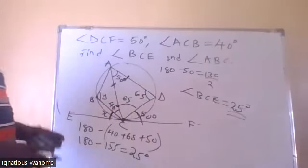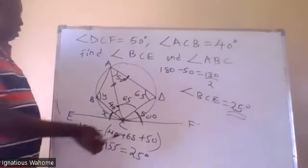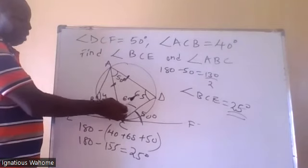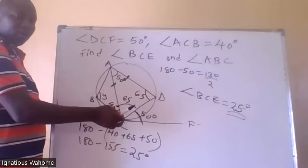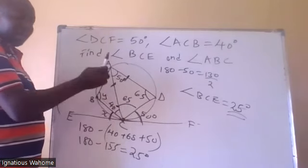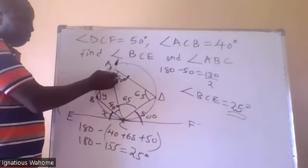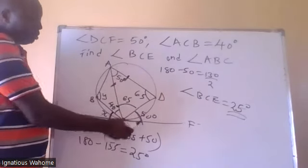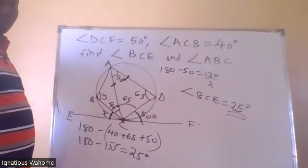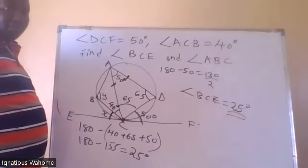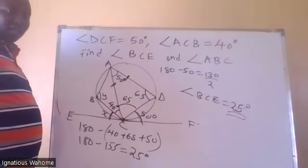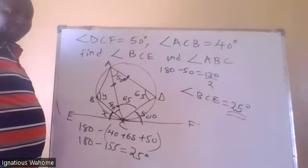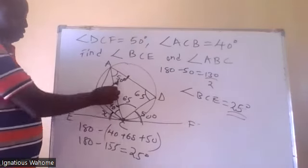You start with this: there's a tangent, there's a chord. The angle subtended by the chord is equal to the angle subtended by the chord in the opposite segment, which equals the angle the same chord makes with the tangent. So this angle is 50 degrees. That angle there is 50 degrees.